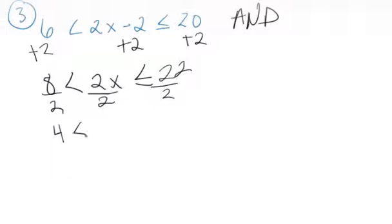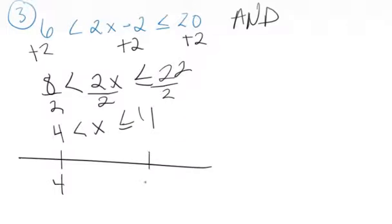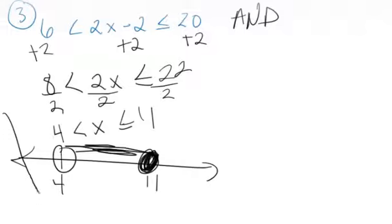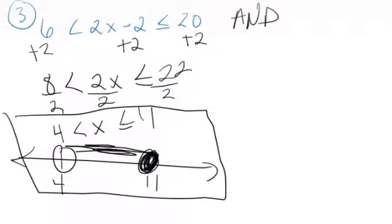And we're going to get 8 less than 2x, which is less than or equal to 22, divide by 2 on every side. And we get 4 less than x, which is less than or equal to 11. We can graph this pretty simply by putting 4 down and 11 right underneath where I see it. We're going to have a closed circle on this one because I have a bar. We're going to have an open circle on this one. It's an AND problem, so we're going to graph right in between. And there's our answer. The graph and the work.